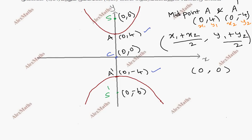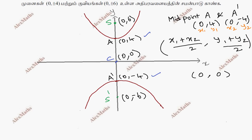The curve is along the y-axis. The distance from center to vertex gives a = 4. The focus is at (0, 6), so ae = 6.